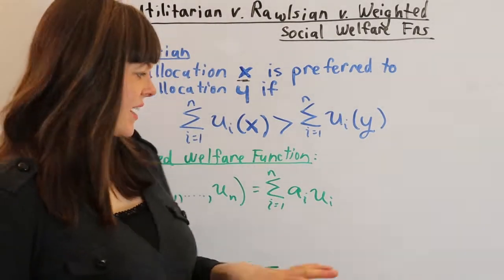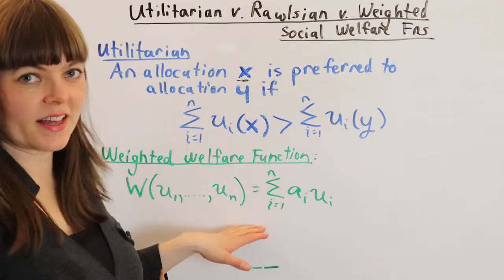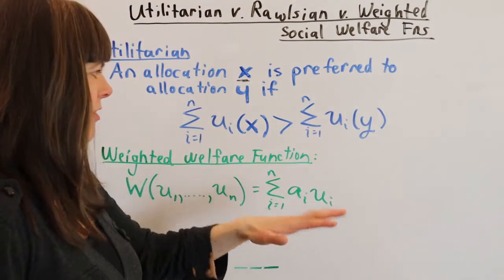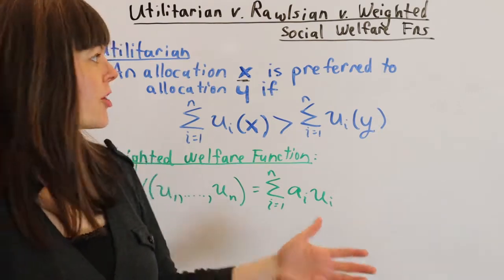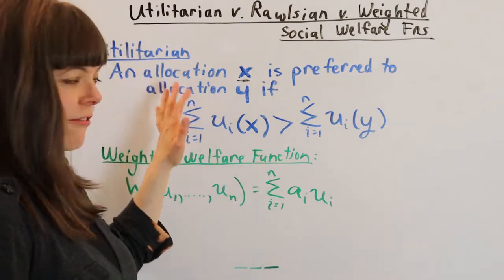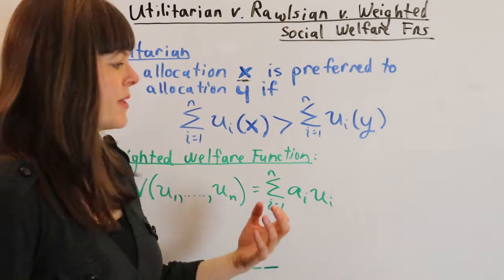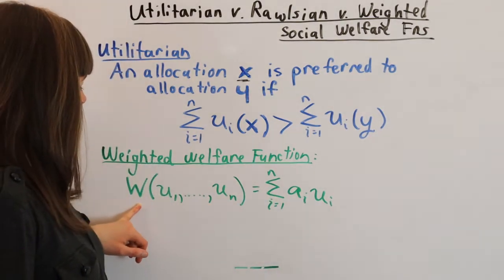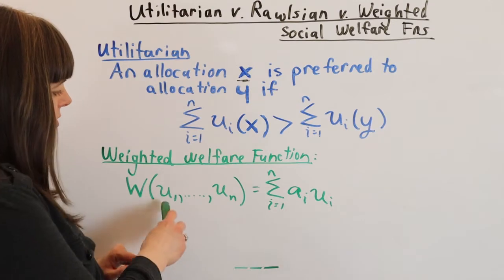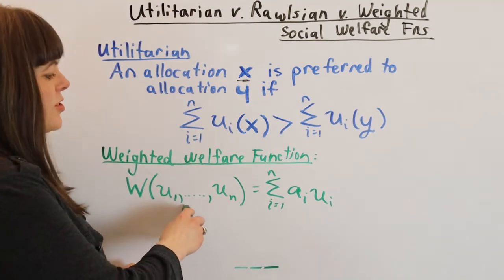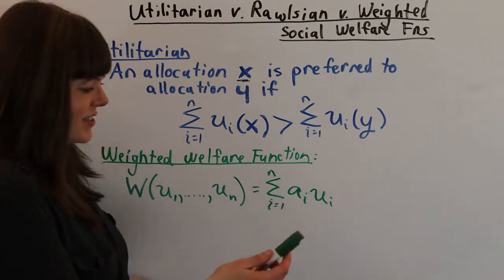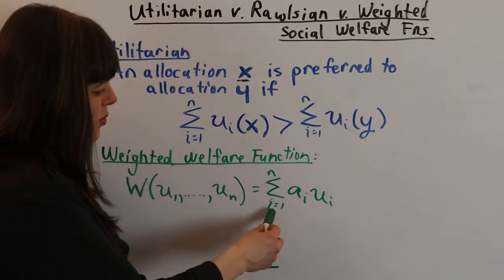This second social welfare function that the Halvarian book talks about is the weighted social welfare function, which is very similar to the utilitarian social welfare function except we're allowed to place different weights on different people. So here we have utility of person one, utility of person two, all the way up to utility of person n. If we have three people in our roommate situation, n is equal to 3 as usual.